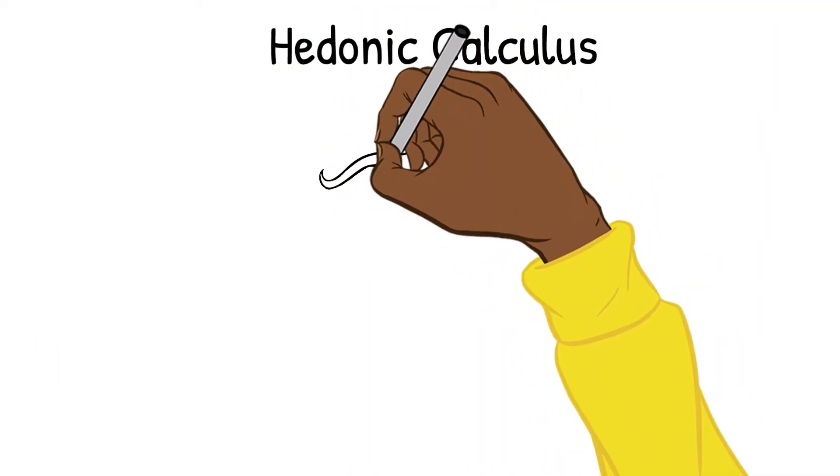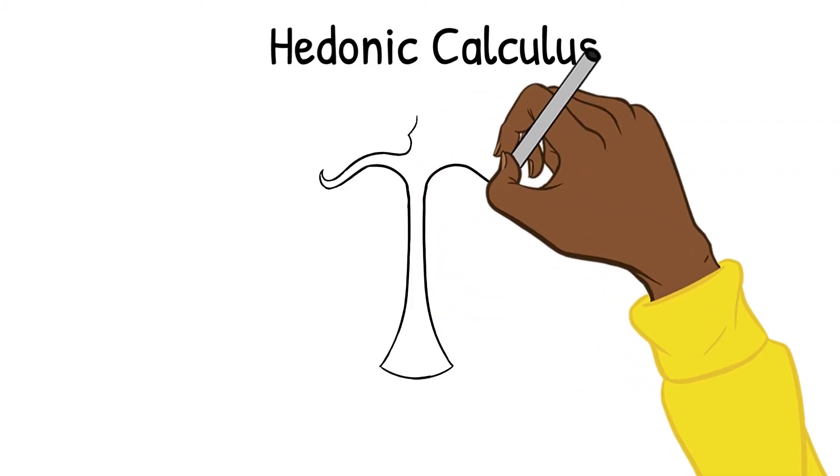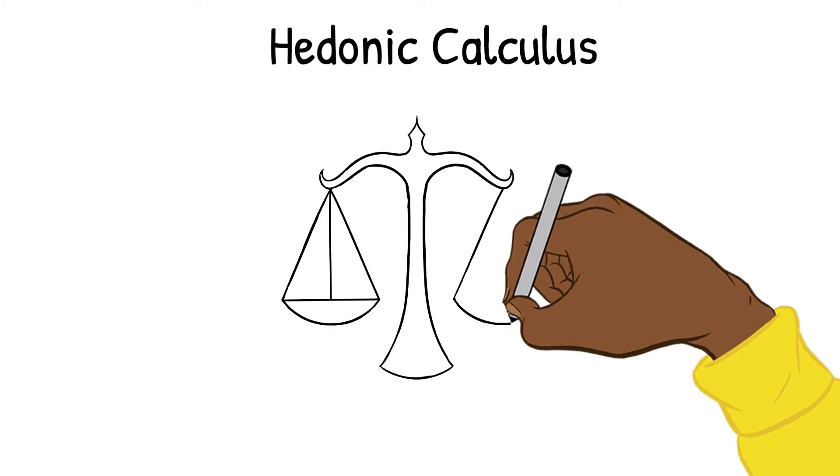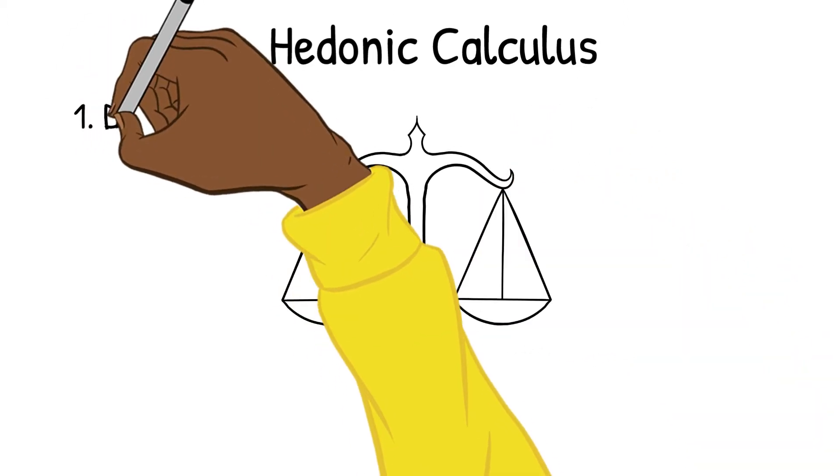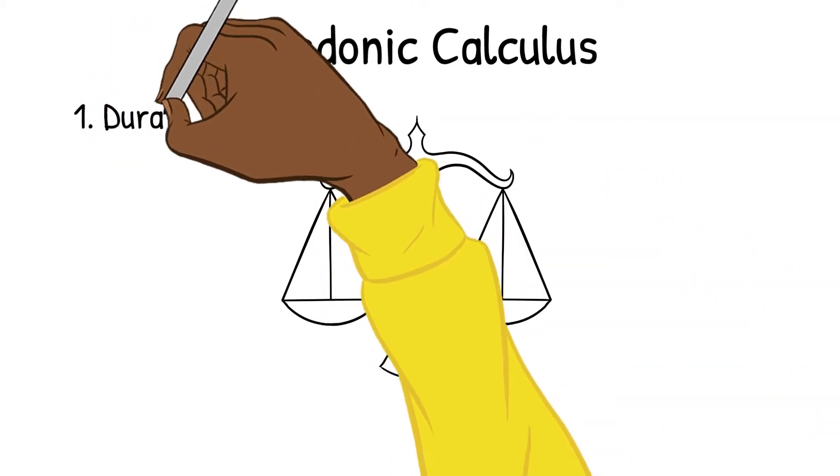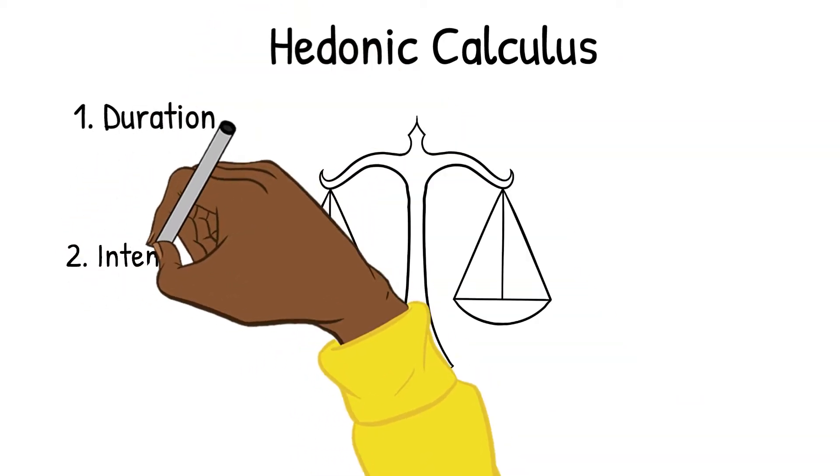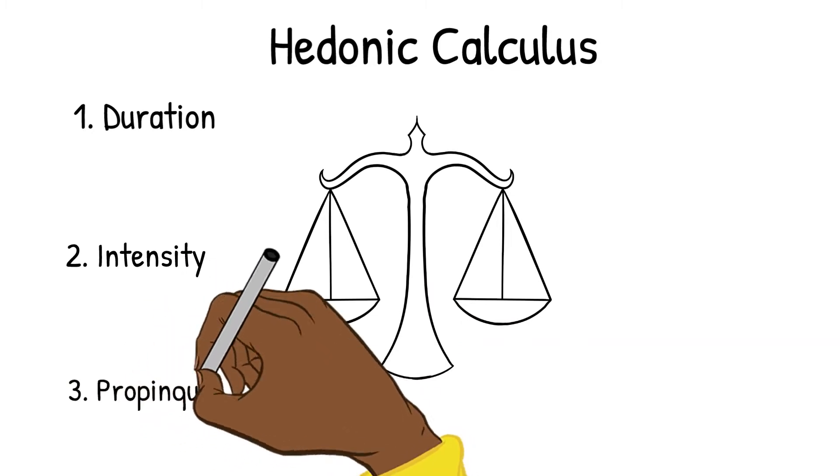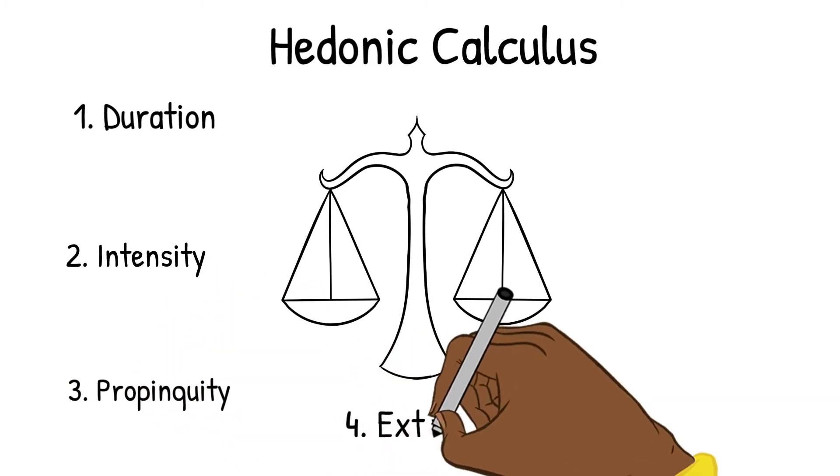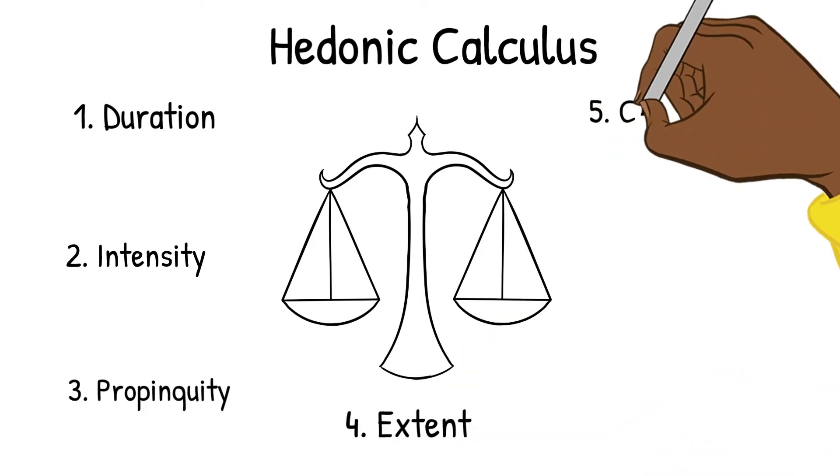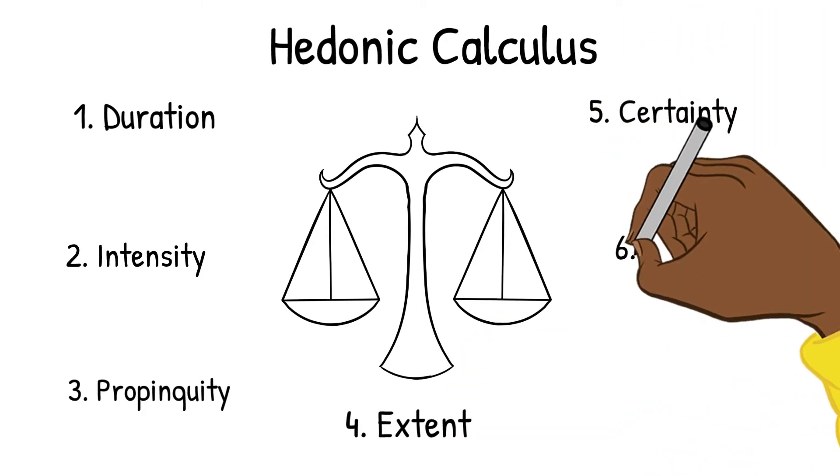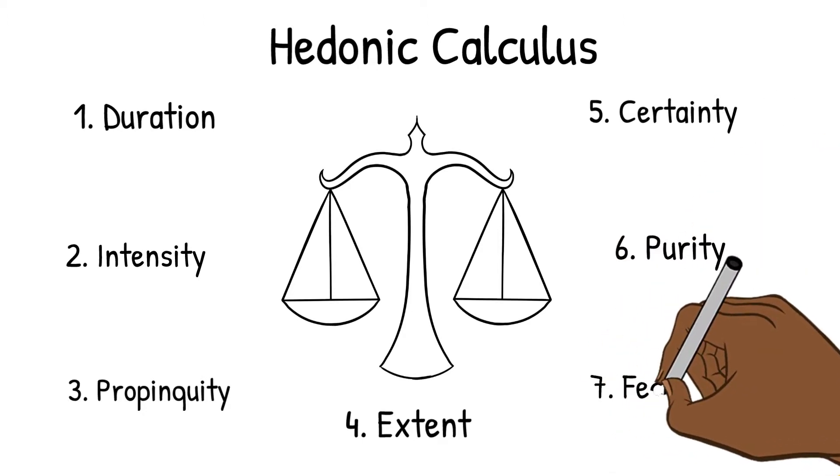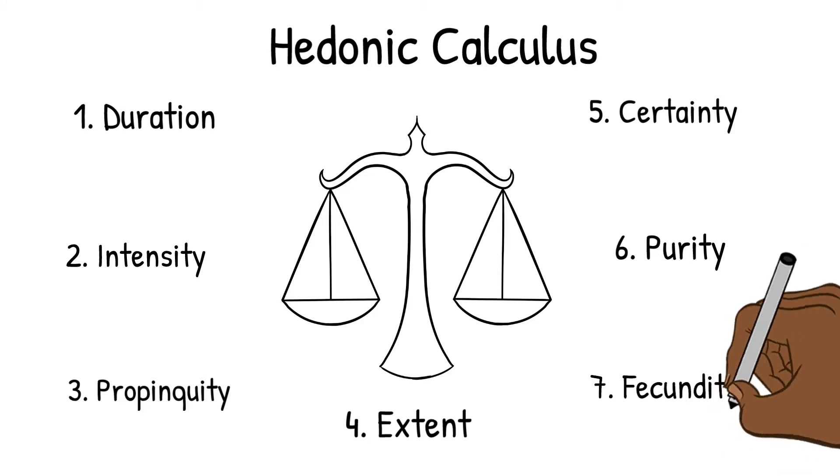The hedonic calculus is the measuring scale Bentham provided us with to determine what action is right or wrong in a given situation. Which action will maximize pleasure and minimize pain in respect of their: one, duration - how long will the pleasure or pain last; two, intensity; three, propinquity - how near is the pleasure or pain; four, extent - does the act widely cover enough lives; five, certainty - how probable is it.